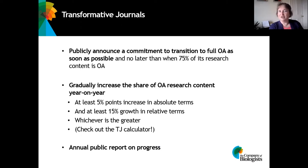In addition, the journal must gradually increase the share of open access research content year on year, and there are two ways of determining your target. One is that you need to have at least 5 percentage points increase in absolute terms — for example, moving from 10% OA to 15%, and from 15% to 20%. The second route is that you also have to grow by at least 15% in relative terms.